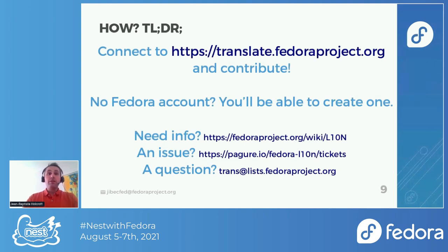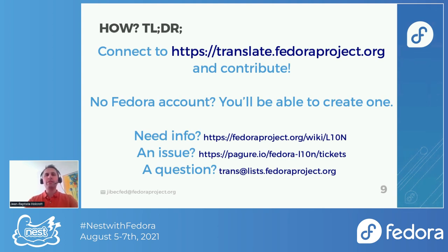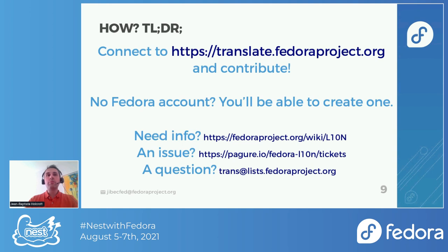Of course, you will see some issues, and if you do, you can report them to this link. We have a Pagure repository containing our list of tickets. You can say, hey, I cannot access this project, I cannot find this thing, and ask the question there. Or you can use directly the translation mailing list. In this mailing list, you will reach contributors from all over the world, and the few people like me who are coordinators or admins.